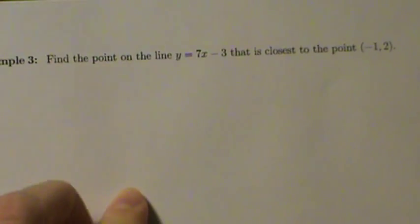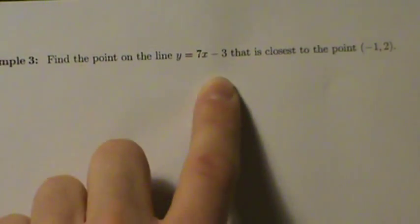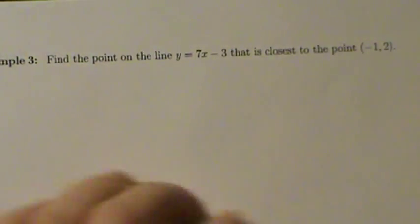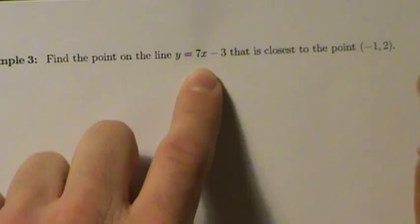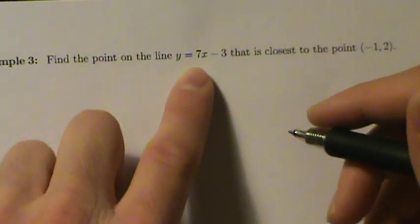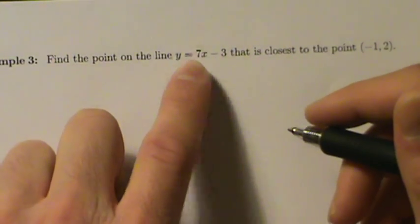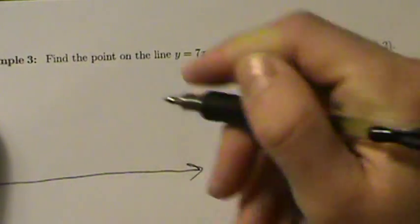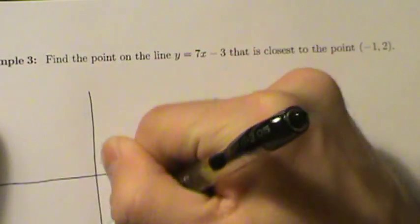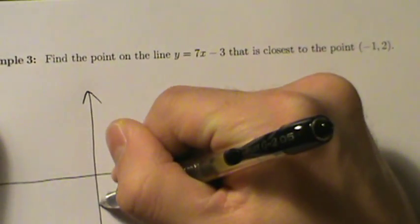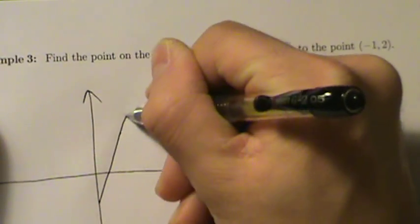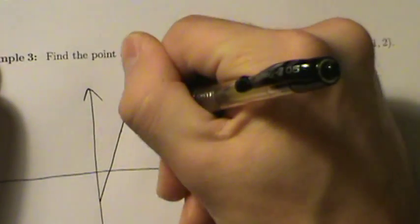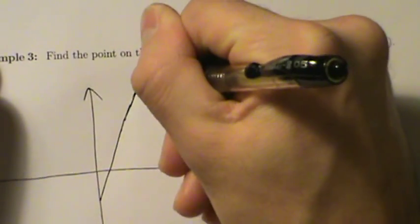Let's draw a picture. We just have to make a graph of this line and then plot that point. So y equals 7x minus 3 — that's a straight line with slope 7 and y-intercept negative 3. We don't have to make it exact, so slope 7, y-intercept negative 3, something like that — a straight line.